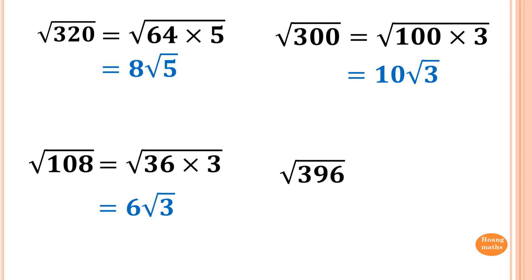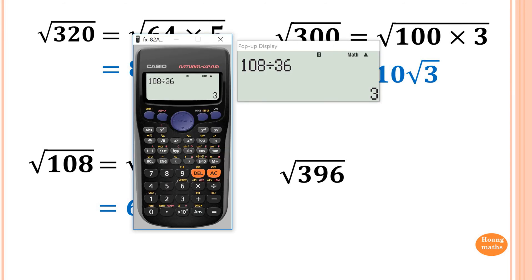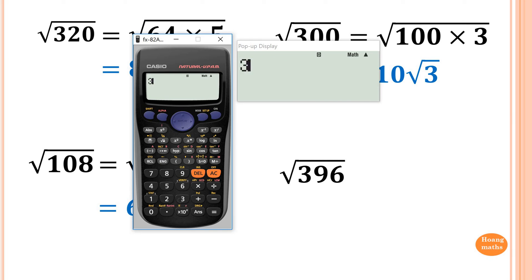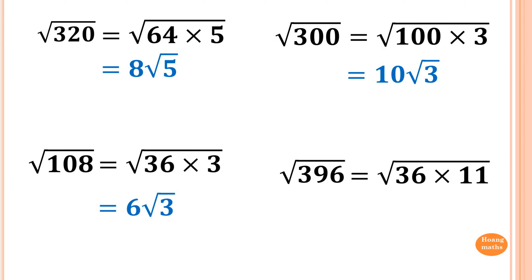Last one: √396. Now 396 is a big number. If you think about it — 3 plus 9 plus 6 is 18, which is divisible by 9. So 9 is a square number. 396 divided by 9 gives me 44. Now 44 is not a perfect square, but 44 is 4 times 11. So 4 and 9, meaning 4 times 9 is 36. So 396 divided by 36 gives 11, meaning 36 times 11. Square root of 36 is 6, so the answer is 6√11.